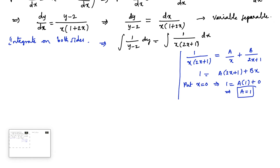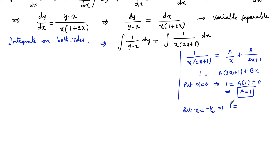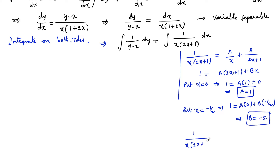To find the other constant, set 2x plus 1 equal to 0, so x equals negative one half. Substituting, 1 equals A times 0 plus B times negative one half, so B equals minus 2. Hence 1 upon x times 2x plus 1 equals 1 upon x minus 2 upon 2x plus 1.